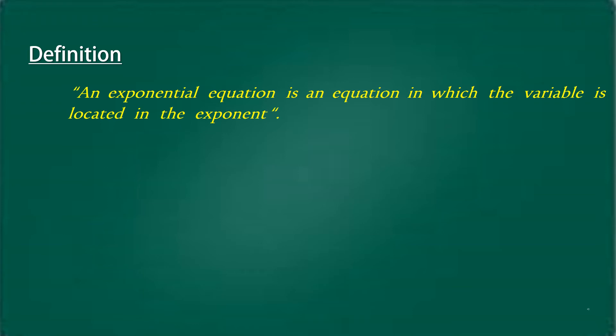In this example, we are talking about 27 raised to power 2x minus 3 is equal to 81 raised to power 3x minus 5. This is an exponential equation because the variable is in power in the form of the exponent.